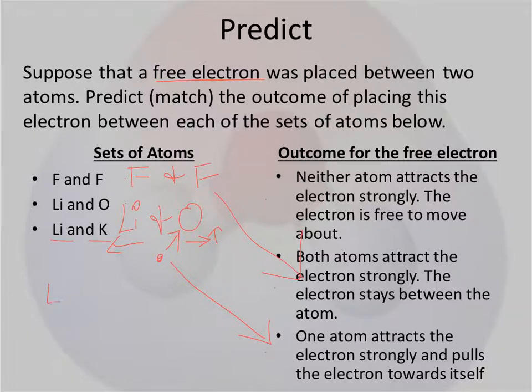Lithium and potassium are both on the left side of the periodic table. They're both metals. So neither one of them are very electronegative, so they're not really going to pull on that electron very strongly, which means that the electron is just going to be kind of free to move about, which is this top possibility.